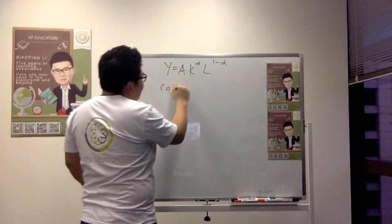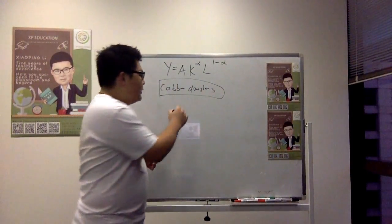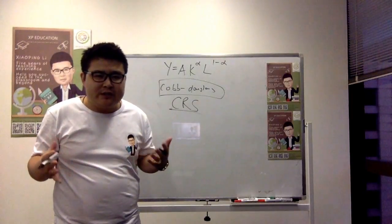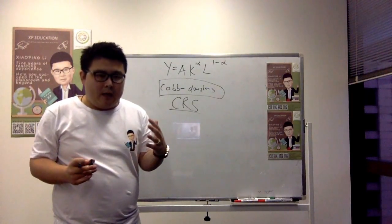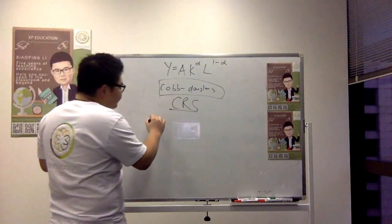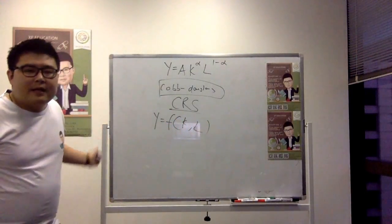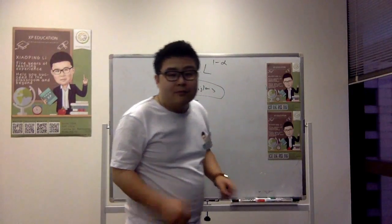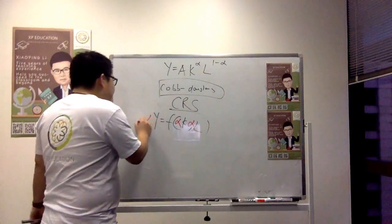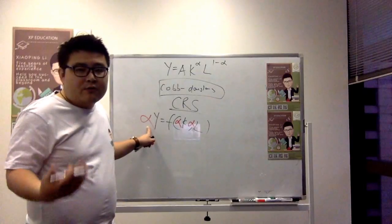Cobb-Douglas corresponds to what we call constant returns to scale. What does constant returns to scale mean? If I double my input, my output will also be doubled. So output is equal to a function of capital and labour. If I increase the inputs by some factor, it will also increase my output by the same factor. This is what we call constant returns to scale.